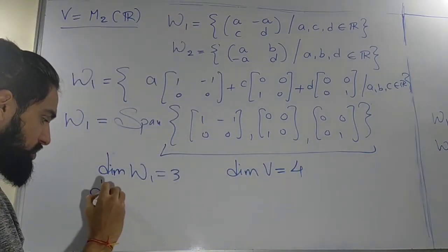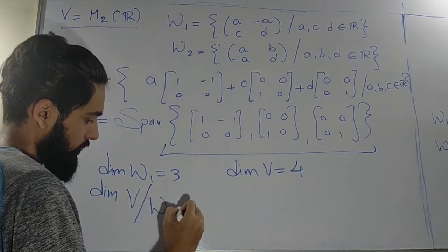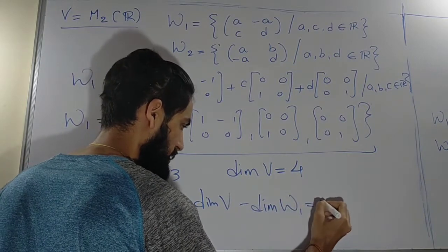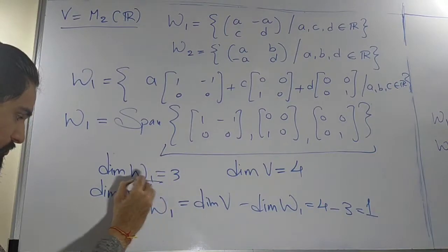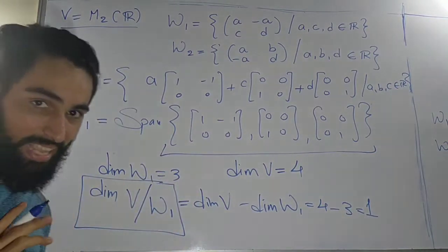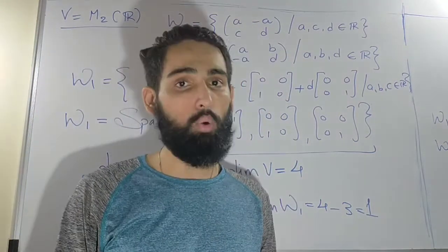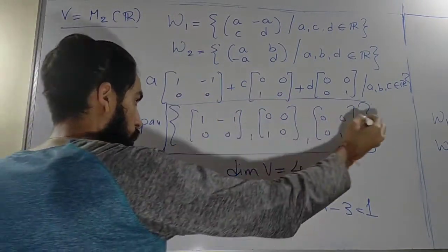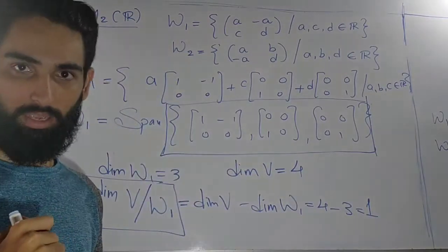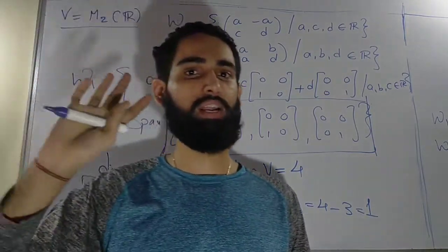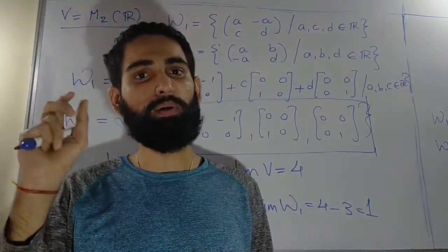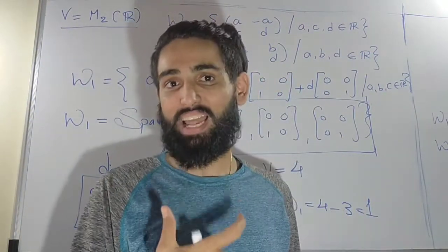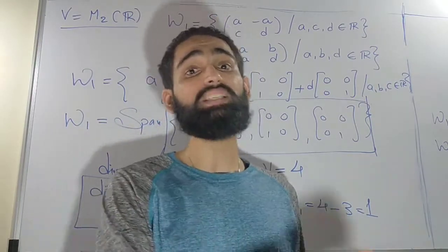The dimension of V/W1 is dimension of V minus dimension of W1, that is 4 minus 3, which equals 1. This means V/W1 is generated by a single element. To find that element, I need to extend the three basis vectors of W1 to a basis of V. By the theorem from the previous lecture, if we extend a basis of a subspace to a basis of the full vector space, the extra elements introduced form the basis for the quotient space.